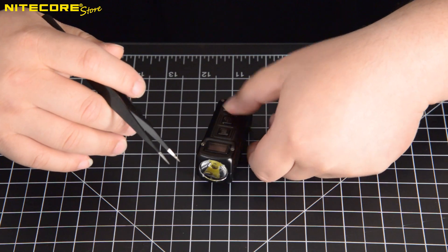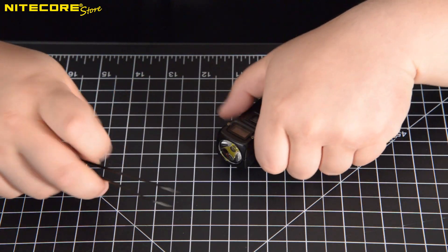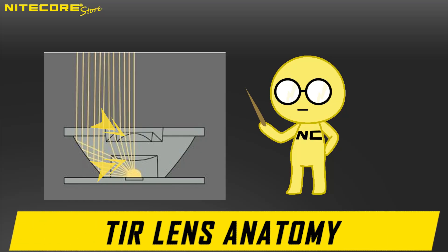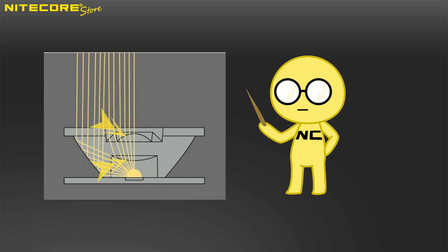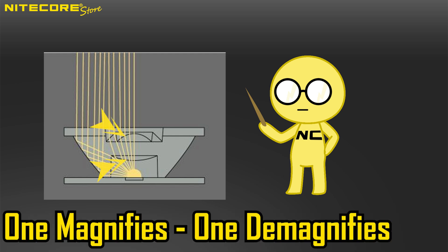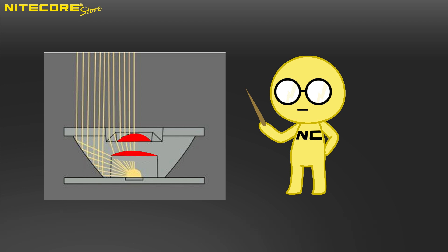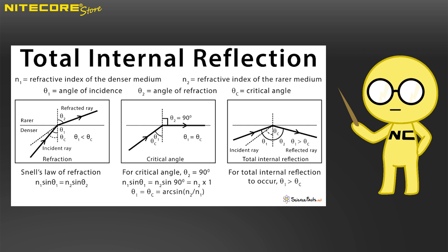Here is a side profile of a TIR lens. Inside the central column are two lenses oriented inversely to each other, which creates the illusion that you are looking at something dead on, because one is magnifying while the other is demagnifying, and they in essence cancel each other out. For instance, if they were both facing the same way, it would operate in a similar fashion to a rudimentary microscope and magnify the LED.